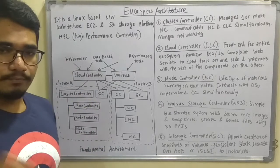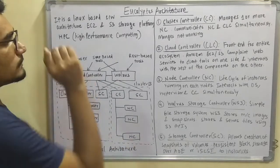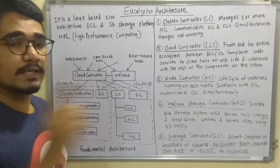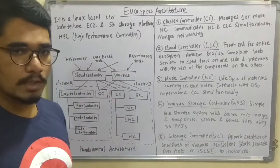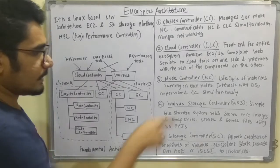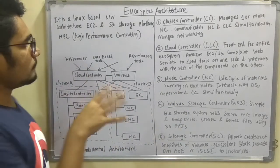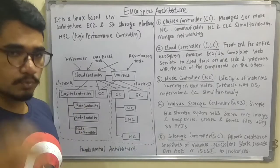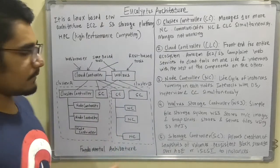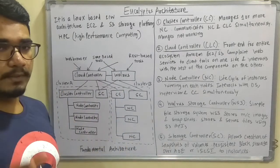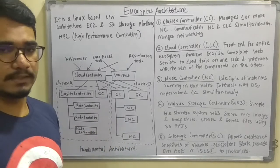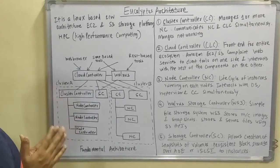This diagram is simple but you have to be very careful while drawing it. There are five main components: the Cluster Controller (CC), the Cloud Controller (CLC), the Node Controller (NC), the Walrus Storage Controller (WS3) — which is essentially the S3 simple storage system — and finally the Storage Controller (SC). One more optional component is the VMware Broker (VB), for intermediate access of VMs for ESX and ESXi systems.